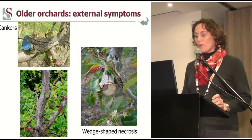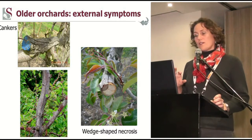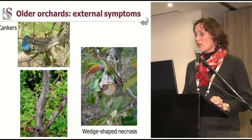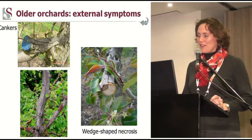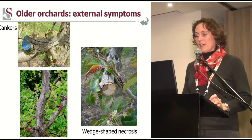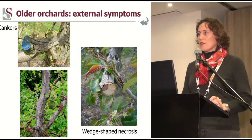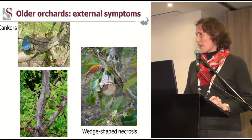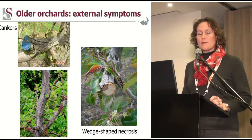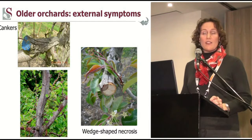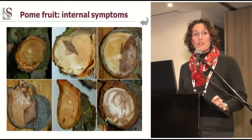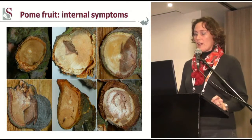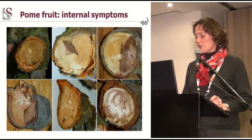You also find cankers, and on the top left you can see that dark black discolouration originating from a wound covered by a blue wound sealant — raising the question of whether that wound sealant was effective. You can clearly see a canker running down the trunk of the tree. When we cut such a canker, you can see the internal discolouration — the xylem tissue is completely brown and no longer functional. There are different ranges of dark brown discolouration of xylem tissue, and also some white rot, specifically for pome fruit.